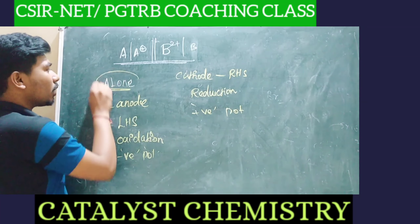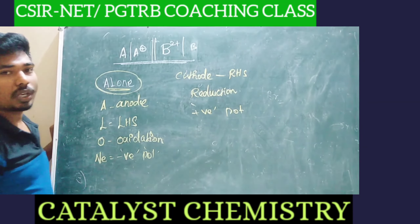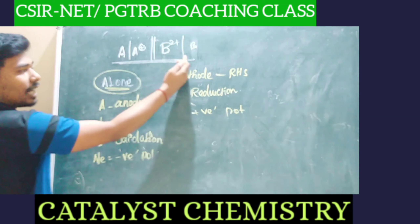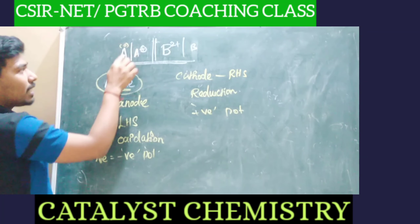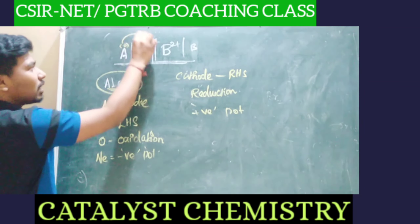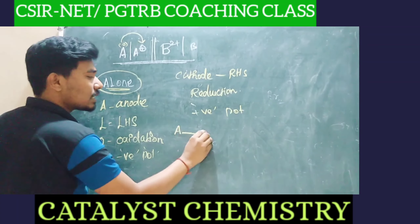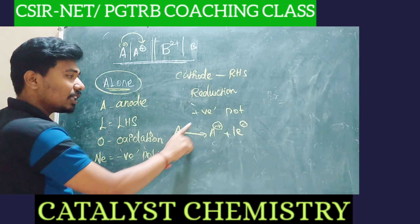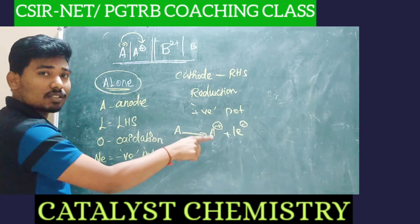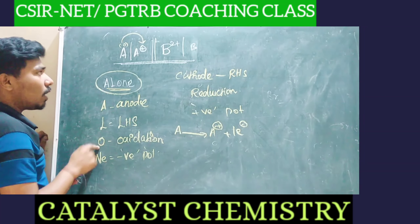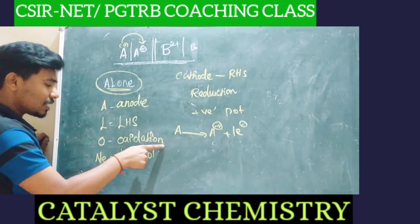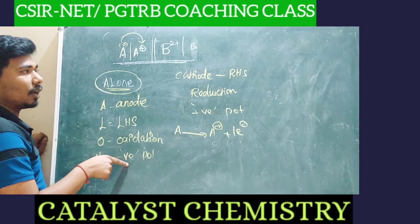So we can identify: one cell — left-hand side is anode, right-hand side is cathode. The left-hand side part is anode, which undergoes oxidation. A is converted into A-plus by the loss of one electron — loss of electron is also known as oxidation. This is the oxidation process, and the electrode potential is one of the potentials.